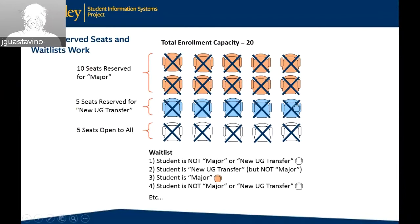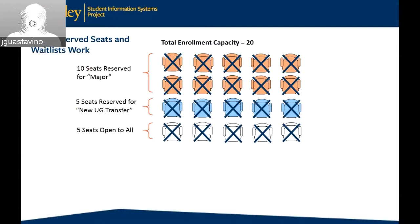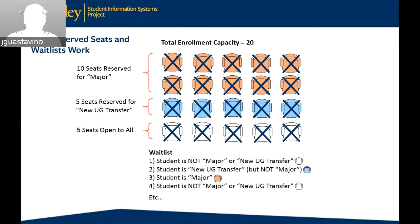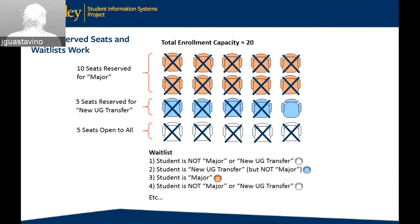Someone wanted a repeat of the last few lines due to sound issues. We have the class, everybody's enrolled, then we look at the waitlist. The first student on the waitlist is not a major or an undergraduate transfer, so they would normally go into the five seats open to all. A student drops, but that dropped student was a new undergraduate transfer, so the seat is reserved. The first waitlisted student who doesn't qualify doesn't get in. That's where you get the question: why can't I get into this class if there's an open seat? The system promotes the next qualifying student — a new undergraduate transfer — who takes the seat and the class closes again.